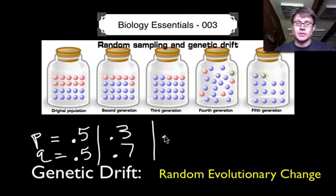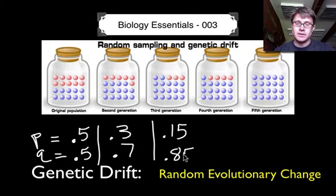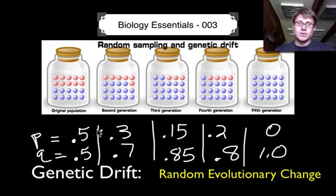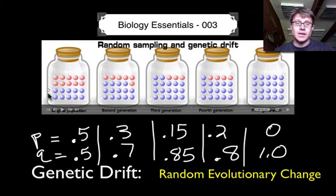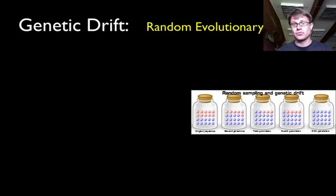On the next one it even drops more. Now what's making it drop is simply chance. So now it's 0.15 and 0.85. And now it goes to 0.2 and 0.8. And then eventually it goes to 0 and 1.0. And so what we've seen is a drift. Or just due to random size of the population we get the elimination of that red allele or that red color. And that's genetic drift.